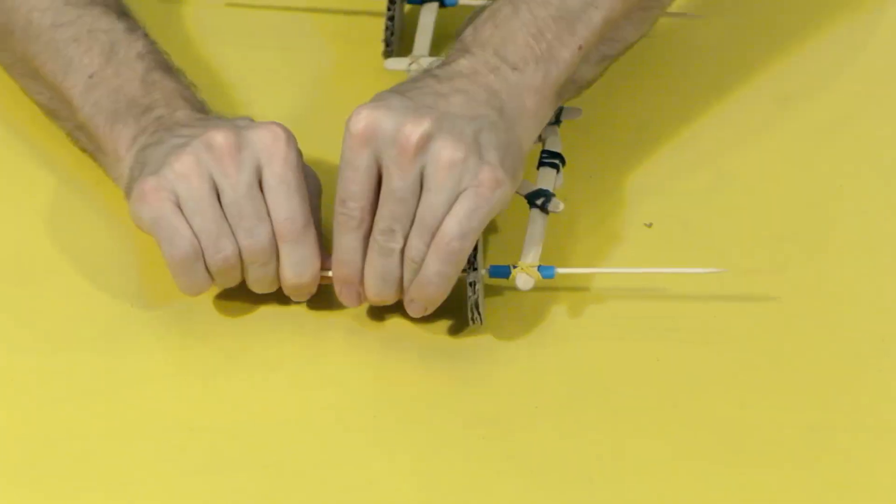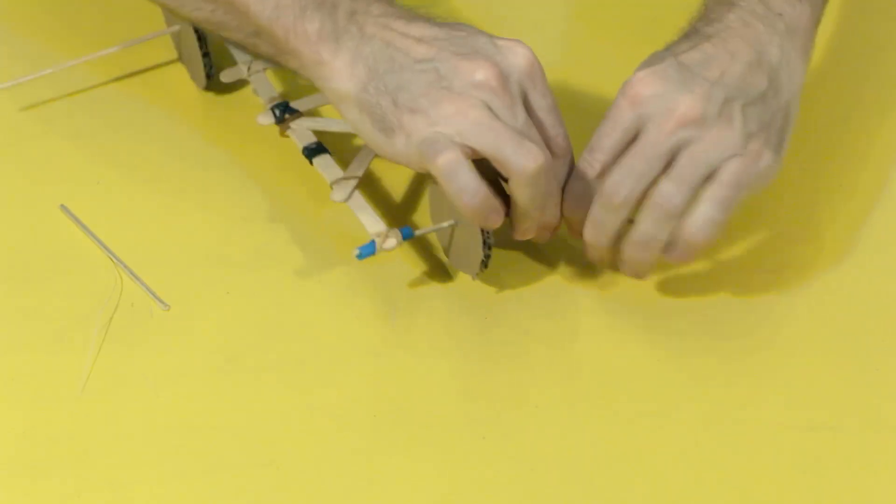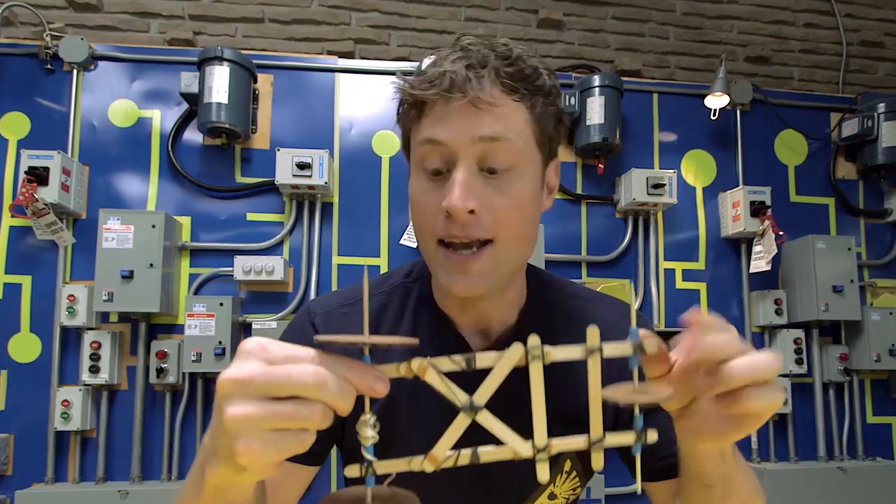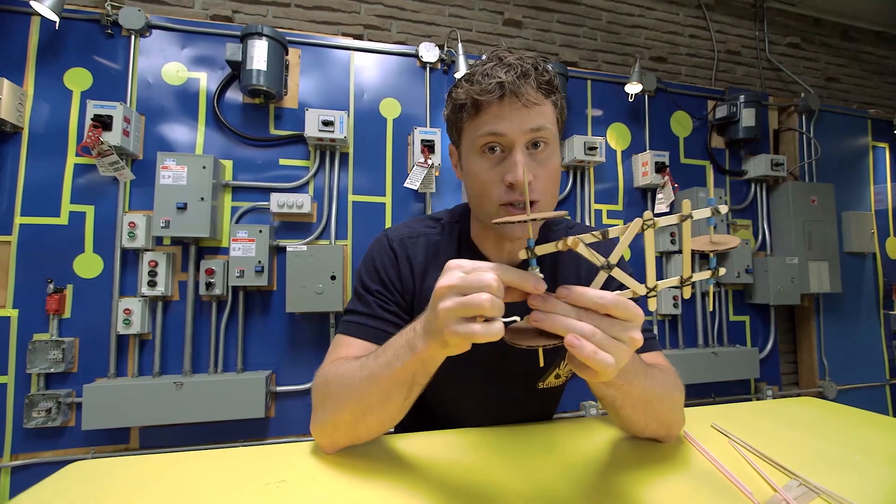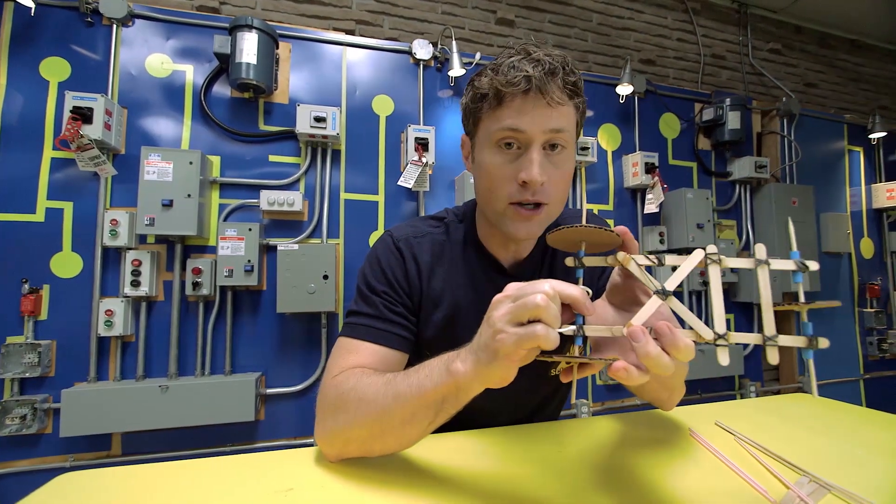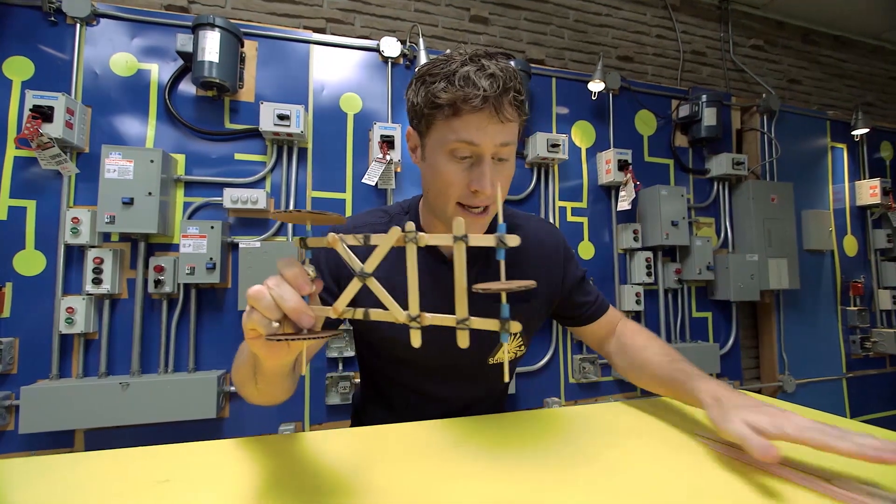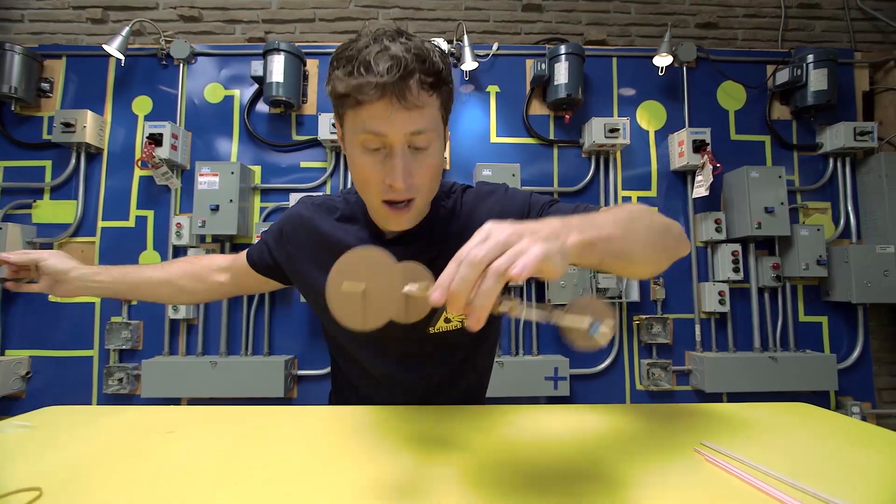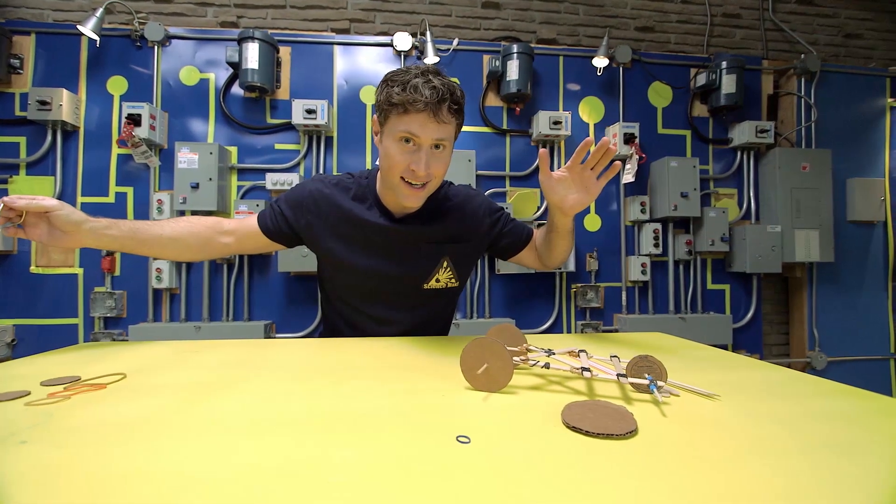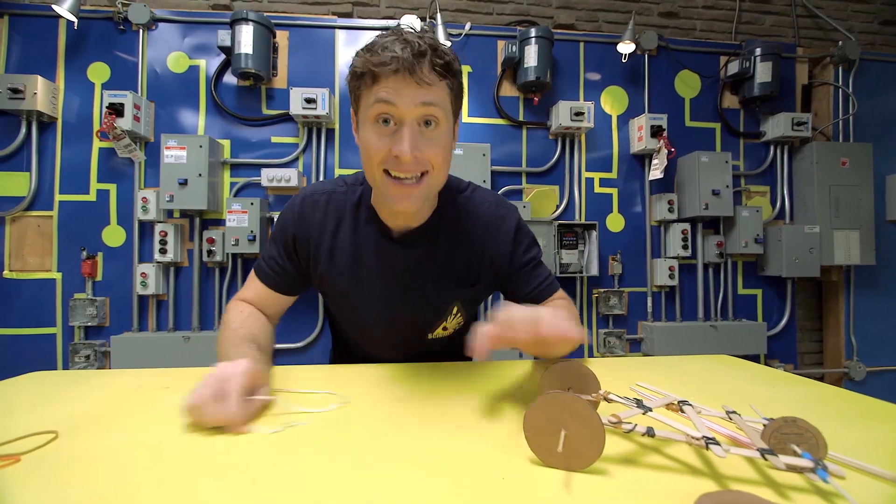You can trim the skewers afterward by just breaking them off short. Now the last part is to wrap some string around the back axle so you can pull and the wheels will spin. Let's check it out and see how it works. Didn't work that well, did it?